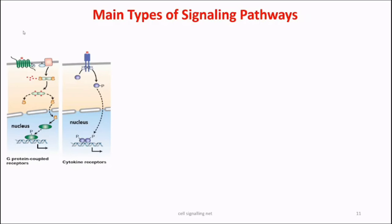The second type is cytokine receptors. The major difference between GPCR and cytokine receptors is that in GPCR, the activated proteins can carry out both cytosolic response and nuclear gene expression, and involve multiple sets of relaying and amplifying proteins. In case of cytokine receptors, the diversity of amplification and relaying proteins used is comparatively less than in GPCR.